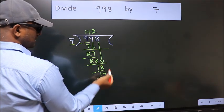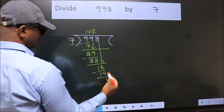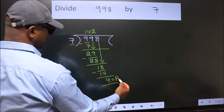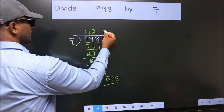No more numbers to bring down, so we stop here. This is our remainder. This is our quotient.